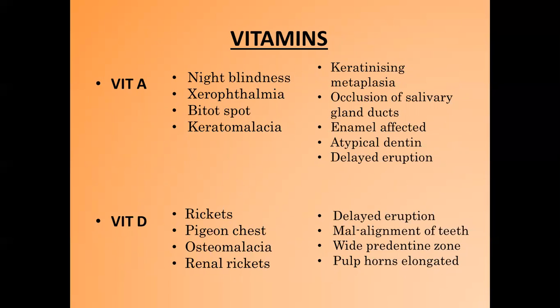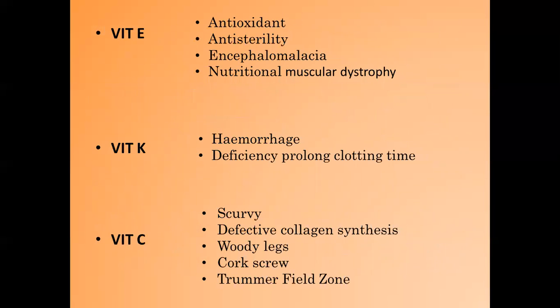Vitamin D deficiency leads to rickets, pigeon chest, osteomalacia, and renal rickets. In the oral cavity: delayed eruption, malalignment of teeth, wide pre-dentine zone, and elongated pulp horns. Vitamin E is an antioxidant, anti-sterility vitamin, and its deficiency causes encephalomalacia and nutritional muscular dystrophy. Deficiency of vitamin K causes hemorrhage and prolonged clotting time.